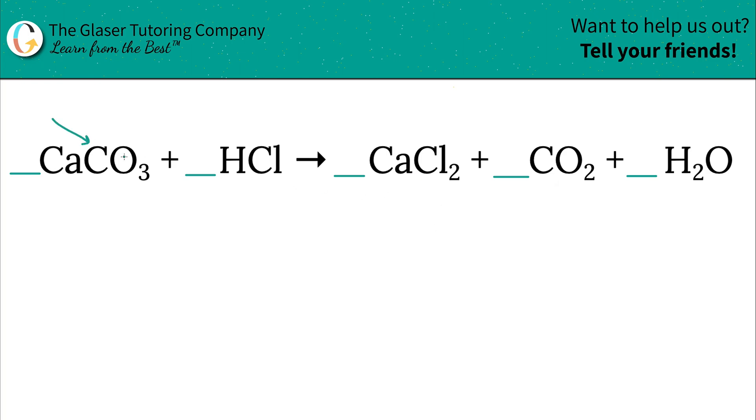The next element I see is carbon. Carbon is only in this compound on the left. Do not confuse that with chlorine, and it's only in this one compound on the right. So I want to balance it. So I have one carbon here on the left. I also have one carbon on the right. So that's balanced. Cool. Let's move on.